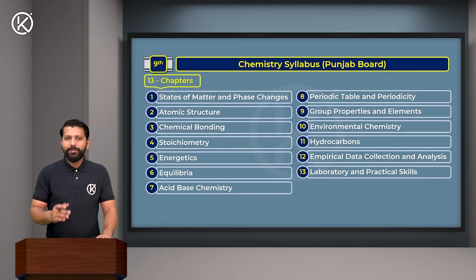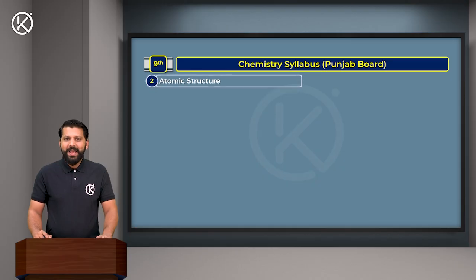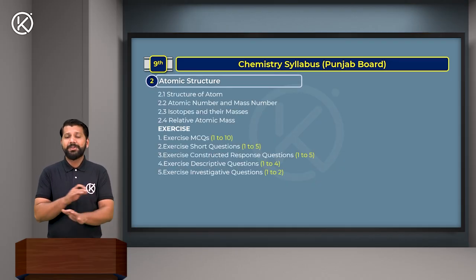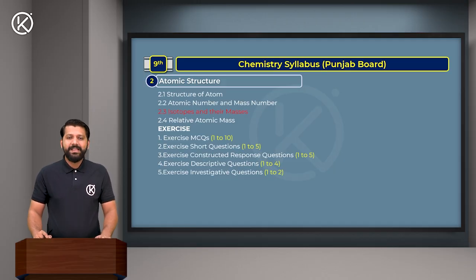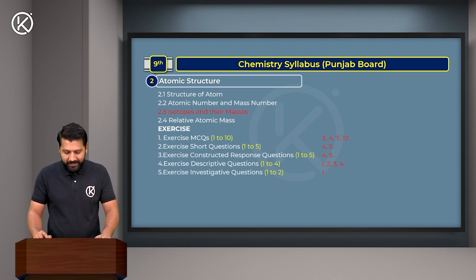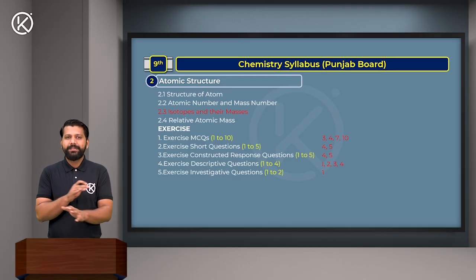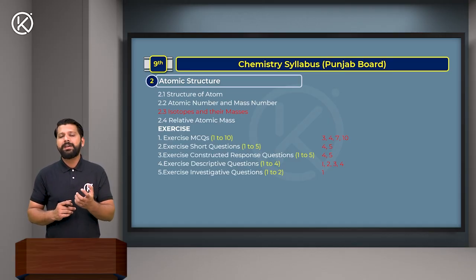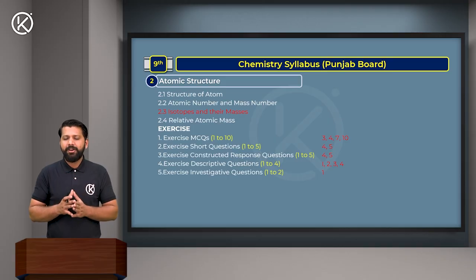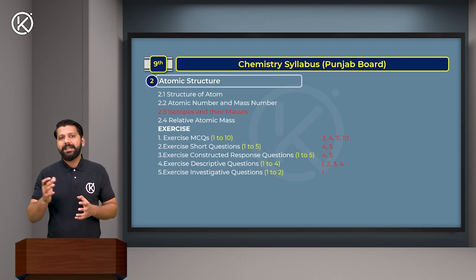After Chapter 1, we concentrate on Chapter 2 - Atomic Structure. The excluded topic is 2.3 - Isotopes and Their Masses. From the exercise, the excluded questions are: MCQs 3, 4, 7, and 10; Short Questions 4 and 5; Constructive Response Questions 4 and 5; Descriptive Questions 1, 2, 3, and 4; and Investigative Question 1. By knowing these exclusions, you can plan your study time more efficiently and gain better output.